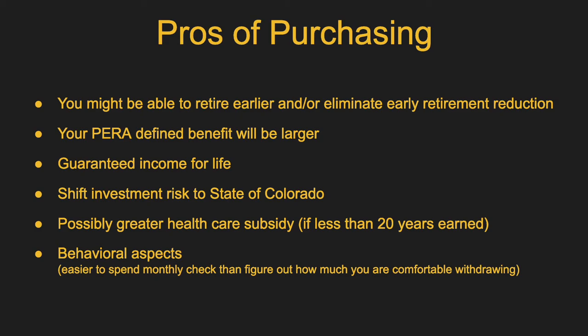By buying years, your PERA defined benefit will be larger. The formula is 2.5% times each year of service, so for every year of service you buy, you'll get another 2.5%. If you buy four years, your benefit will be 10% larger. That is the Option 1 benefit. When you factor in the Option 2 and 3 factors, it will be slightly less than that, but still significant.